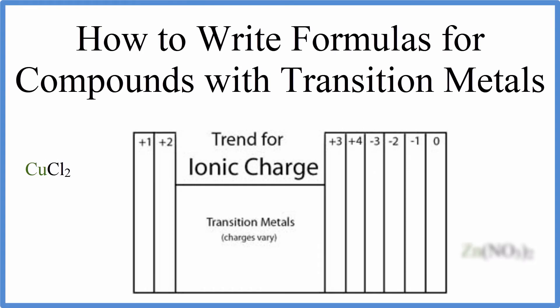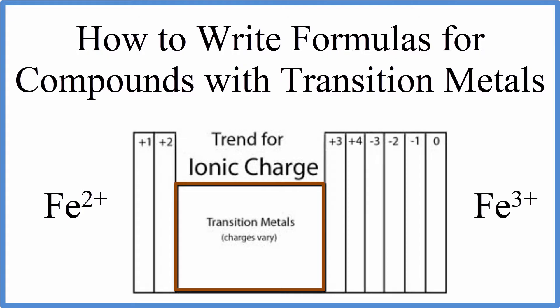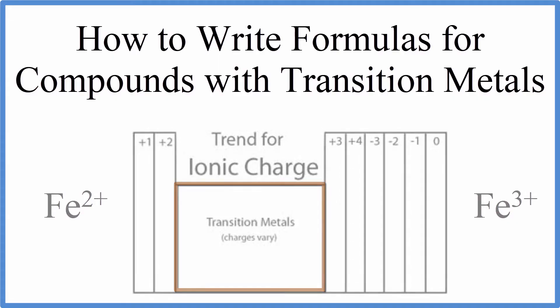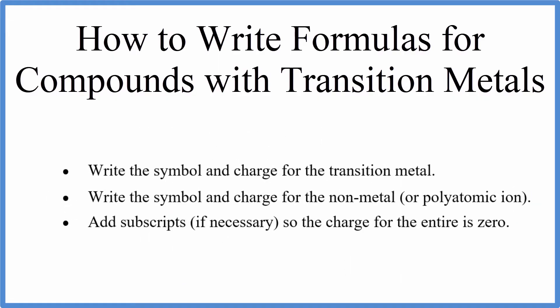When we write the formulas for compounds with transition metals, we already know the charge of some of the elements. For example, if you look at group 1, the charge on those is plus 1. Group 2, that's plus 2. But the transition metals, those charges, they can vary. So for example, you could have iron with a plus 2 charge, or iron with a plus 3 charge. It really depends how it's bonded. To help us write the formulas, we'll use a periodic table, these simple rules, and maybe a common ion table.